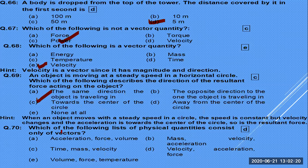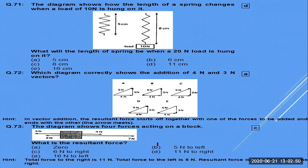Which list consists of only vector quantities? Velocity, time, and force — here time is not a vector, mass and volume are not vectors. Temperature is not a vector. Only the quantities that have direction qualify as vector quantities.